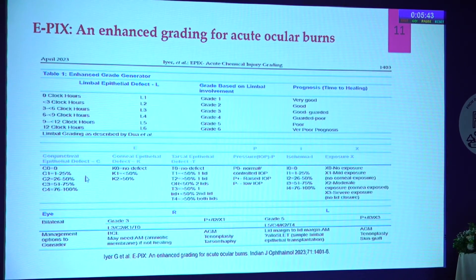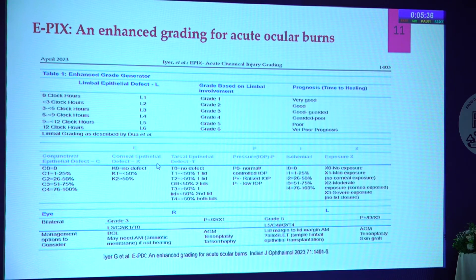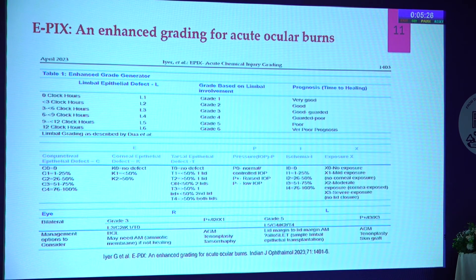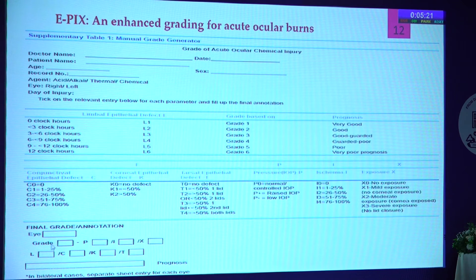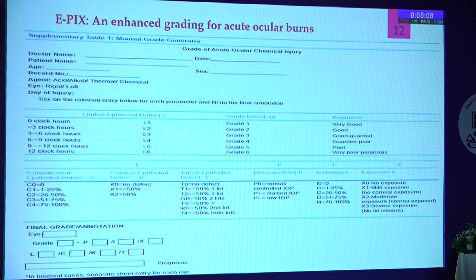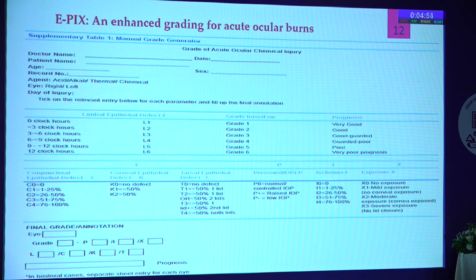In EPICS, bulbar conjunctiva, tarsal conjunctiva, and corneal epithelium are considered separately. Epithelium has all these components in addition to the limbus. Pressure indicates whether IOP is controlled or not. Ischemia refers to how much scleral ischemia is present. Exposure refers to how much of the globe is exposed. Based on all this, the final annotation includes which eye, the grade of injury as per limbal involvement, pressure, ischemia, and exposure. This is actually an online grading system; the URL is not yet in the public domain but is expected to be available in the next few months. Based on this, an algorithm for management has also been provided, which will be discussed in the next slides.